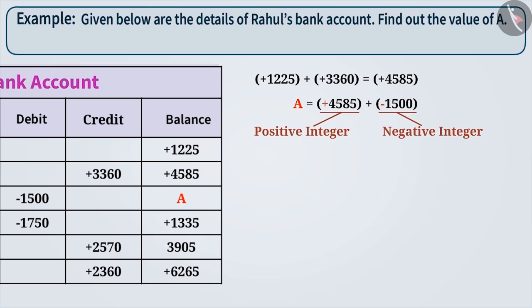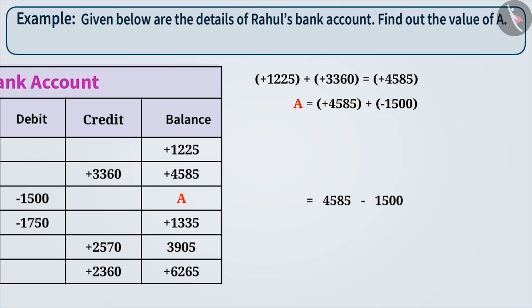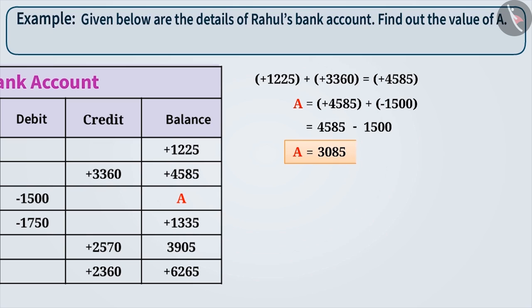You must have noticed that we are adding a positive and a negative integer. To solve this, ignore the signs and subtract the smaller number from the larger number, resulting in 3085. Now, add the sign of the larger number, which is plus, to the result, resulting in plus 3085.